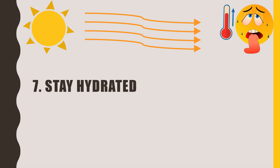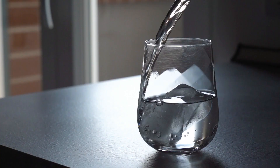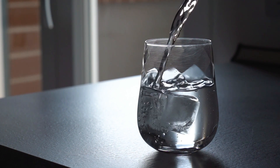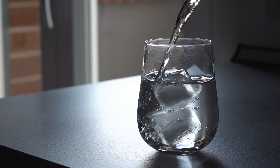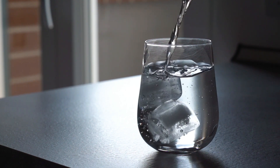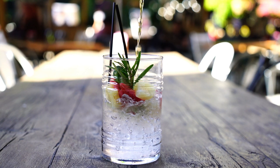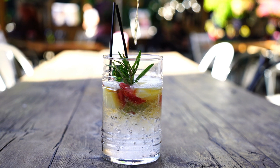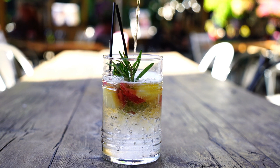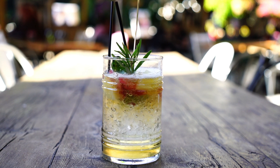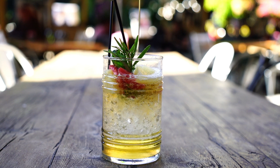Tip number seven is to stay hydrated — drink lots of water. In summer, there are chances of getting dehydrated, which may cause headache, weakness, and even heat stroke. Drinking enough water each day is crucial to regulate body temperature, keep joints lubricated, prevent infections, deliver nutrients to cells, and keep organs functioning properly. Being well hydrated also improves sleep quality.